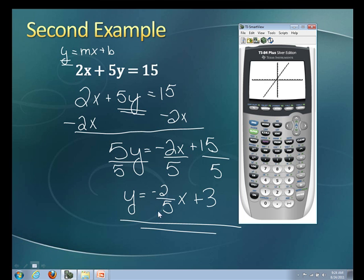So here's our calculator. Let's go back to y equals, and we're going to hit this button, the clear button. We're going to get rid of that last equation. I have y equals negative 2 fifths x plus 3. Anytime I have a fraction, I always put it in parentheses. So I'm going to do parentheses, negative 2 divided by 5, end parentheses, x.